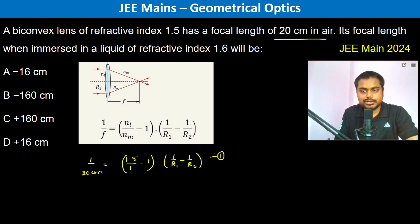Now when it is immersed in a liquid of refractive index 1.6, therefore 1 by f is equal to 1.5 divided by 1.6 minus 1, 1 by r1 minus 1 by r2. So now we'll do 1 divided by 2.